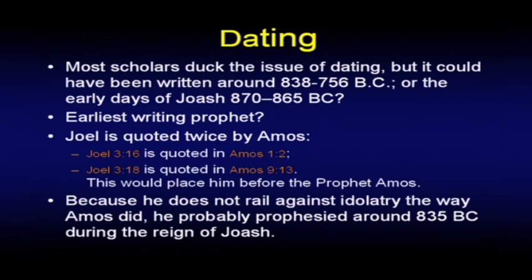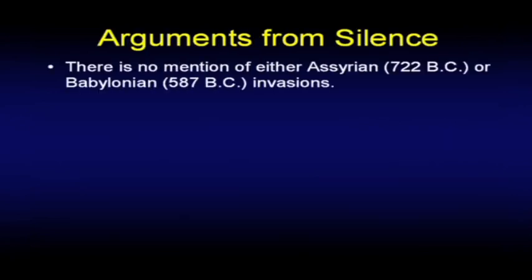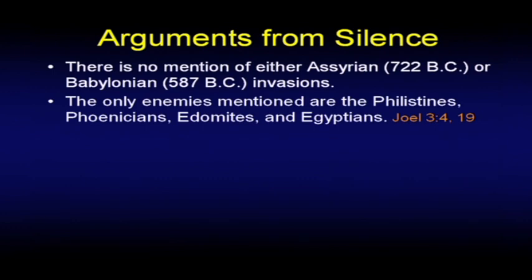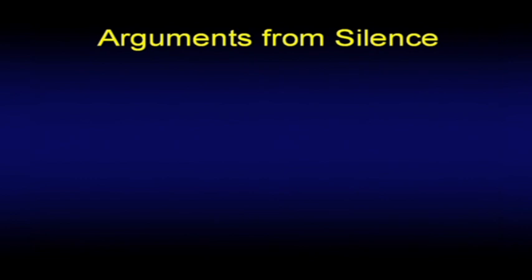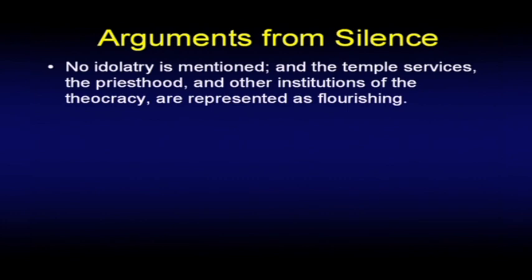But he doesn't rail against idolatry the way Amos did, so he probably prophesied about 835 during the reign of Joash. There's no mention of either the Assyrian or Babylonian invasions, which places him before either one of those. The only enemies mentioned are the Philistines, Phoenicians, Edomites, and Egyptians. Had he lived after Joash, he would doubtless have mentioned the Syrians among the enemies, since they took Jerusalem and carried off an immense spoil to Damascus. So there are some arguments from silence, which need to be done cautiously.